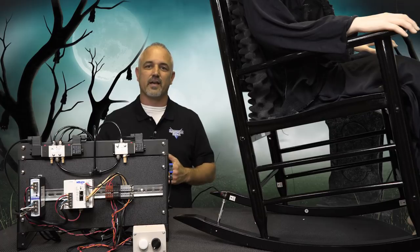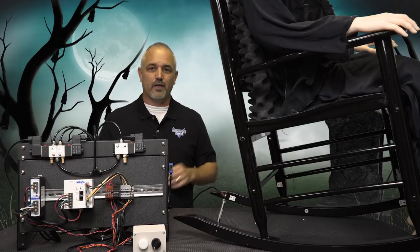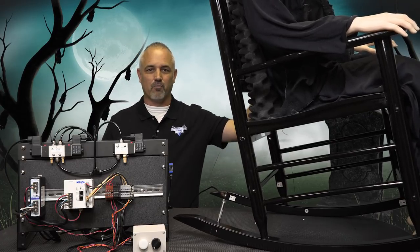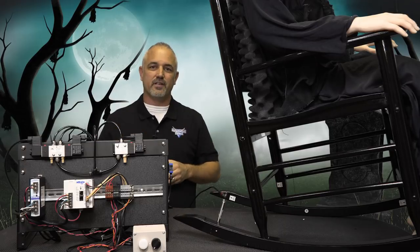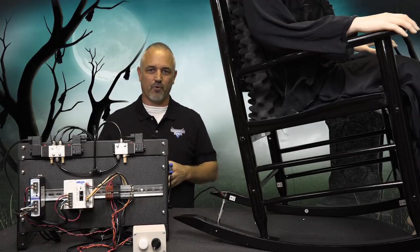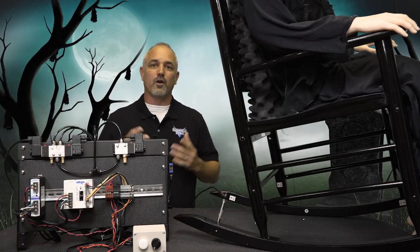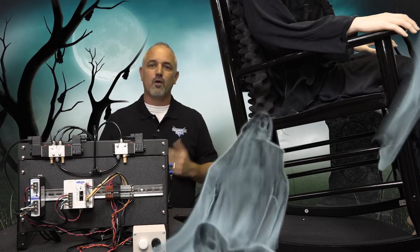This year we decided to build a simple, animated rocking chair and mannequin prop to show you how easy it is to build when using AutomationDirect products. Follow along where I'll show you how to build a prop we call Rocking Ralph.